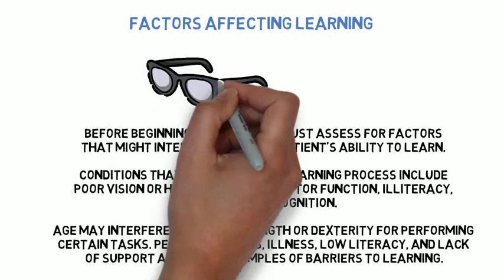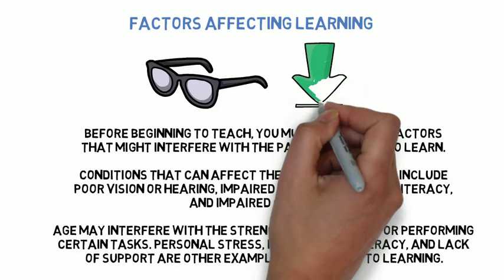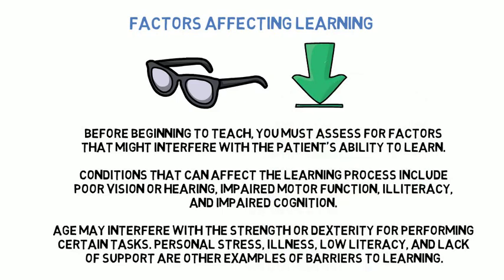Factors Affecting Learning. Before beginning to teach, you must assess for factors that might interfere with the patient's ability to learn. Conditions that can affect the learning process include poor vision or hearing, impaired motor function, illiteracy, and impaired cognition. Age may interfere with the strength or dexterity for performing certain tasks. Personal stress, illness, low literacy, and lack of support are other examples of barriers to learning.